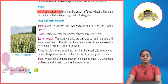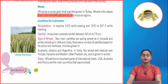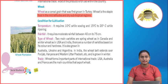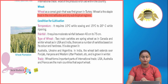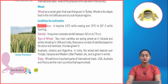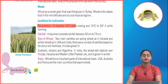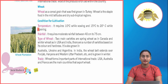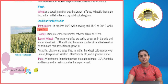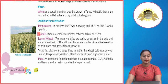Wheat is a cereal grain that was first grown in Turkey. Wheat is the staple food in the mid-latitudes and dry sub-tropical regions. Conditions for cultivation — Temperature: it requires 10 degrees Celsius while sowing and 15 to 20 degrees Celsius while ripening. Rainfall: moderate rainfall between 40 cm to 75 cm.